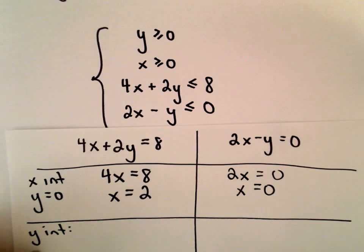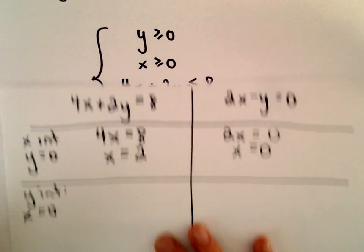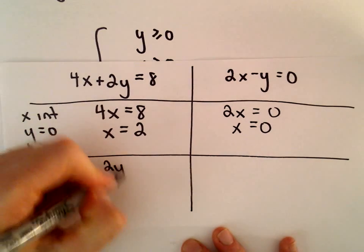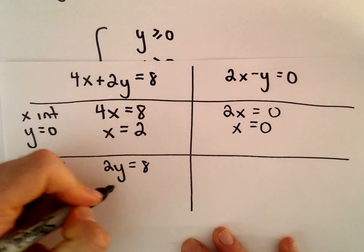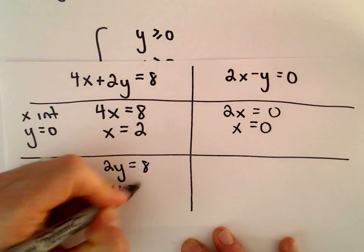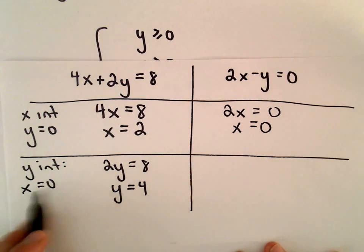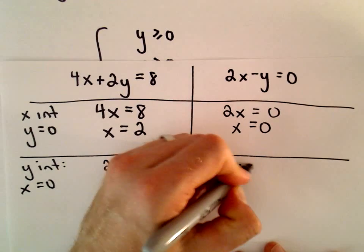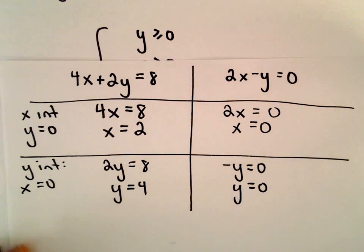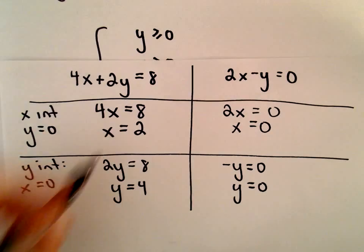To find the y-intercept, we let x equal 0, and if we let x equal 0, we would have 2y equals 8. If we divide both sides by 2, we'll get y equals 4. Okay, back to what I was saying a second ago. If we let x equal 0, we'll have negative y equals 0, which tells us y equals 0.